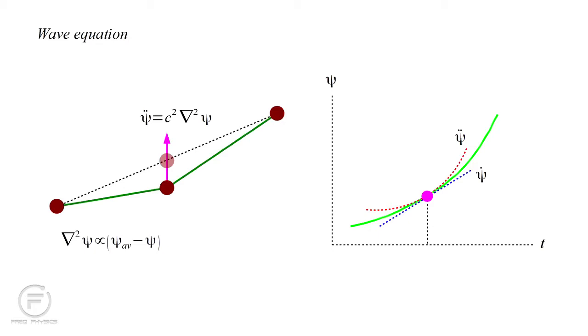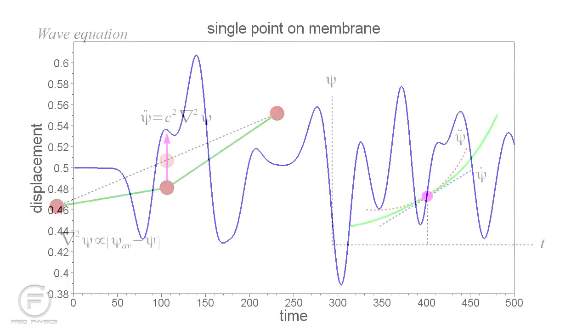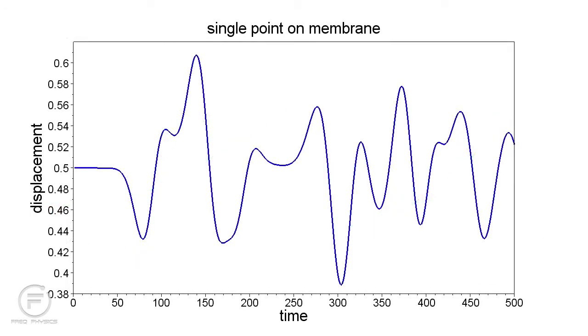Conversely, if the field value were greater than the equilibrium value, then the curvature would be downward. Starting with some initial condition, knowing this curvature at every point allows us to calculate the field at all future times.